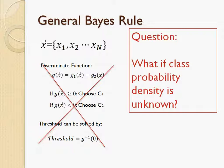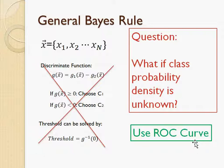But here's the question. In practice, we don't know the class probability density. If we use Bayes' rule, we have to estimate the density from the training data and calculate the threshold. We may ask: is there any way to find the threshold from training data without estimating the density? Actually, ROC curve came to the rescue.